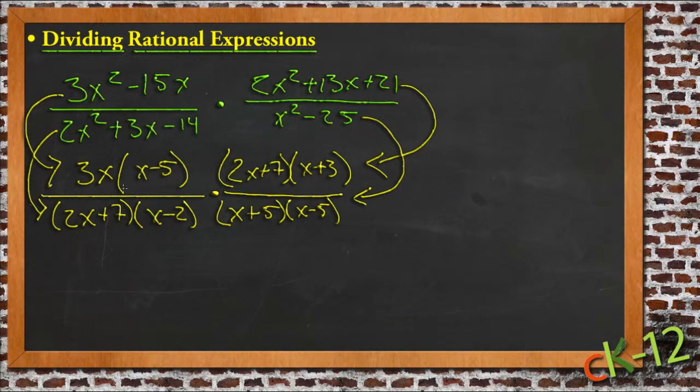So now we have everything factored. We'll go through and cancel before we do any actual multiplication. We've got an x minus 5 there and an x minus 5 there. We have 3x. I've got a 2x plus 7 here and a 2x plus 7 here. And that looks like it.